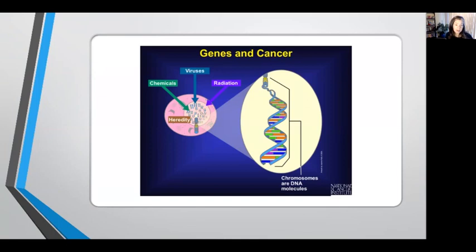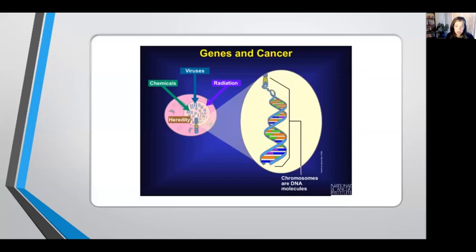So how do cells get damaged? The genes in our cells can get damaged four different ways: by chemicals such as tobacco, by radiation such as ultraviolet light or UV sun exposure, through different kinds of viruses, or through inherited mutations. Chemicals and radiation act by damaging our genes directly, while viruses introduce their own genes into our cells that cause damage and change our cells' ability to function. Inherited mutations are hereditary, passed on from parent to child through the genes in the sperm and egg cells.